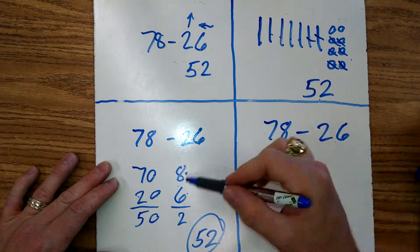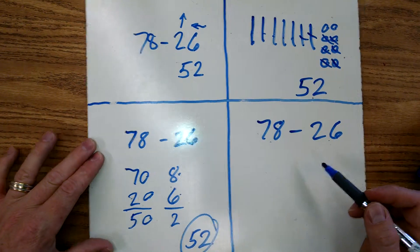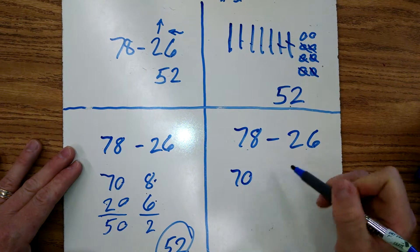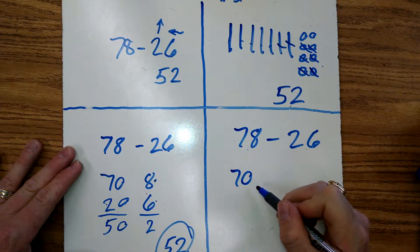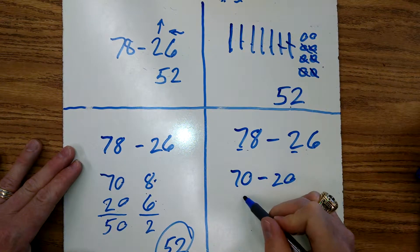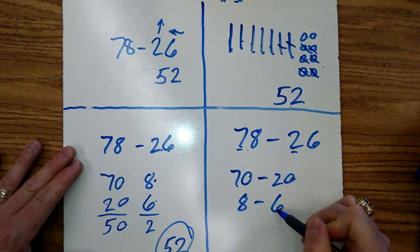Alright? And that's how that one's done. Decomposing, and then we recompose at the end. We can do this going sideways also. Going seventy minus the twenty. And eight minus the six.